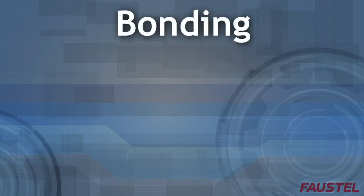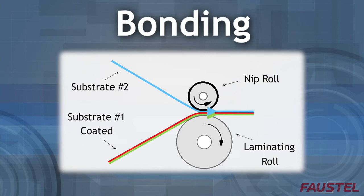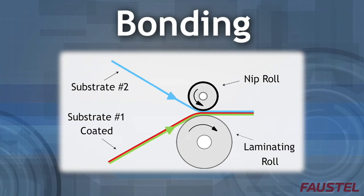The most common laminating technique involves bringing two webs in close contact with one another using a nip, which is created using a chrome-plated steel roll and a rubber-covered steel roll.